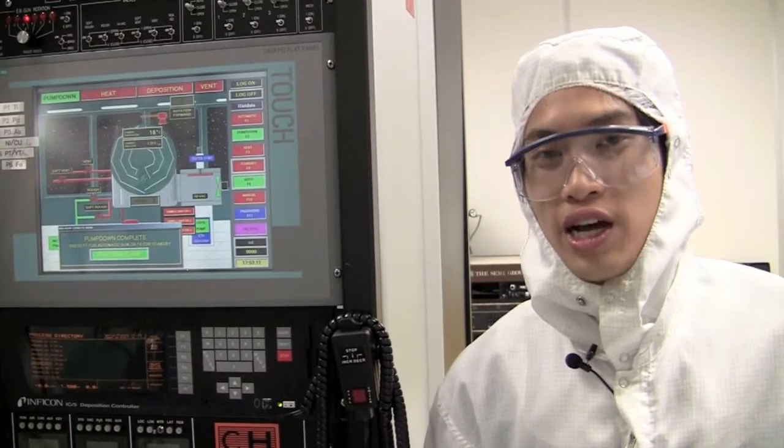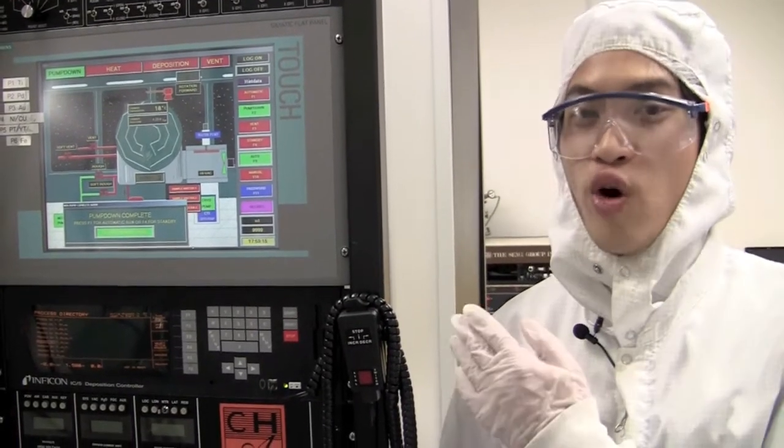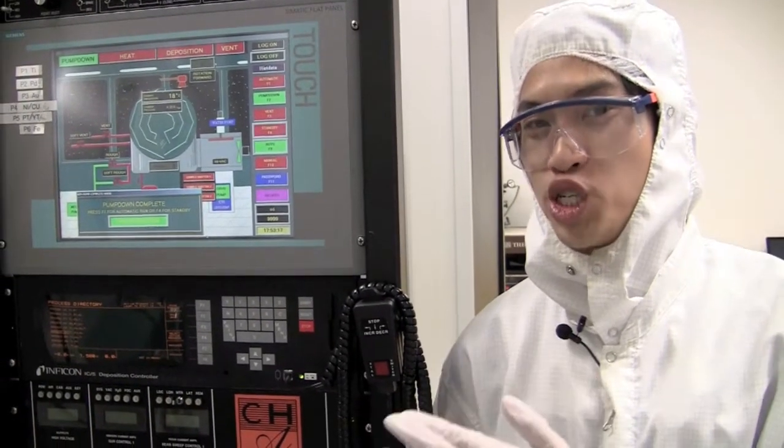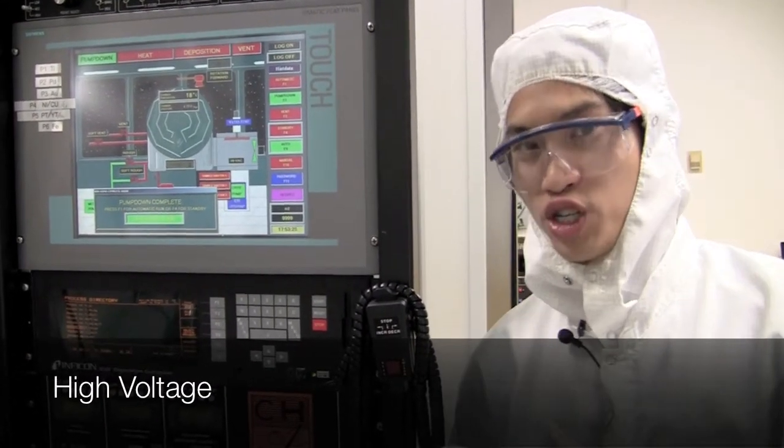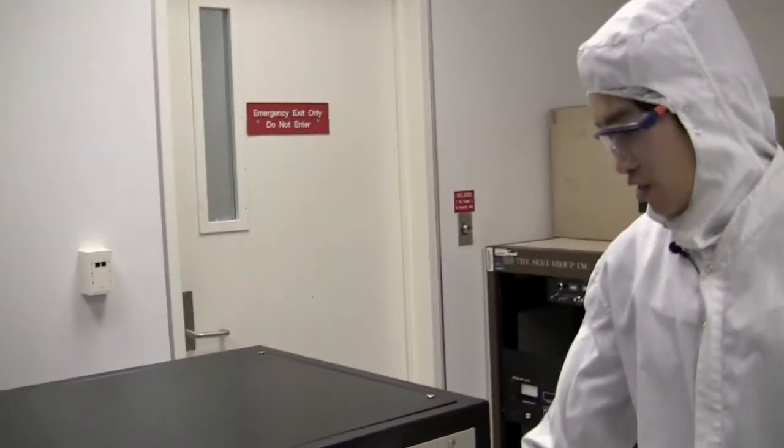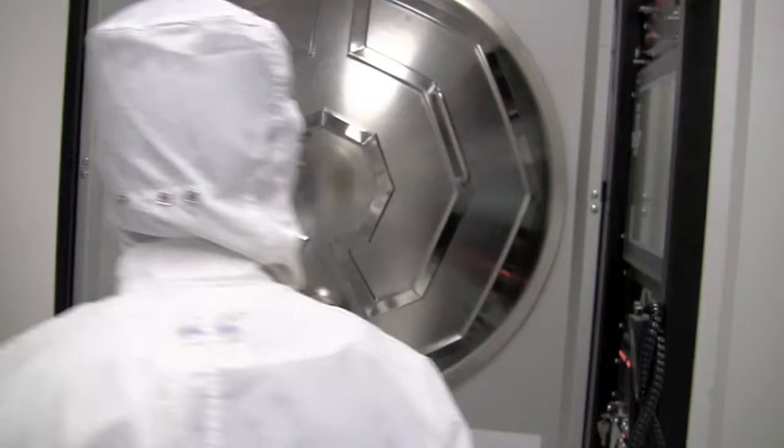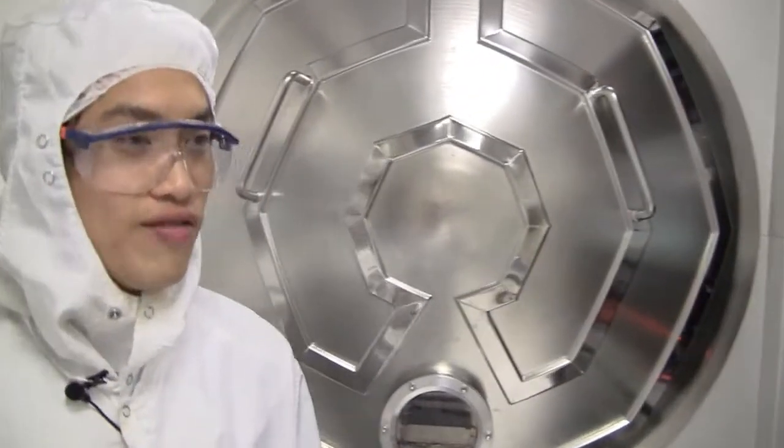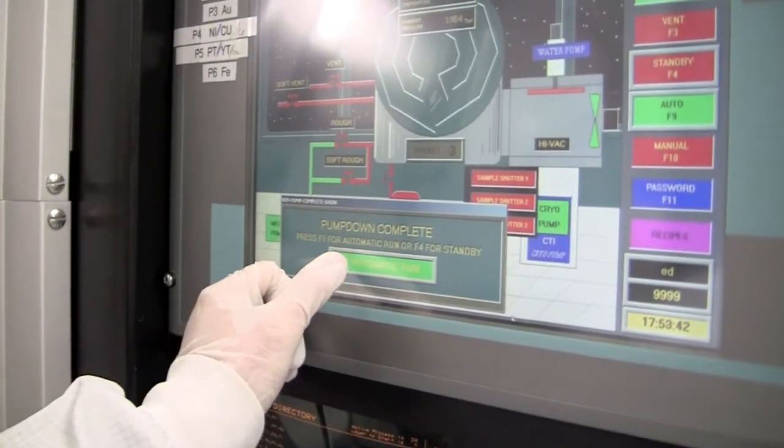Once the tool has reached the set point of 5 times 10 to the minus 6, we can go ahead and tell the tool to begin the deposition process. But in order to do so, we need to make sure that the high voltage source is on. To do that, we're going to go around to the side here and simply flip this switch on here. That makes sure that the high voltage is on. Once the high voltage is on, we can go ahead and push F1 to do an automatic run.